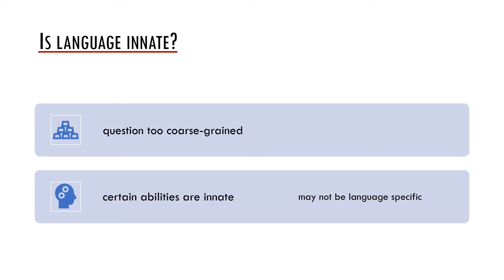Things are much more complicated and we acquire language partially based on certain innate abilities and partially based on the input we get. Moreover, it seems that various innate abilities necessary for language may not be language-specific at all. In other words, language may share various underlying abilities with other cognitive capacities.